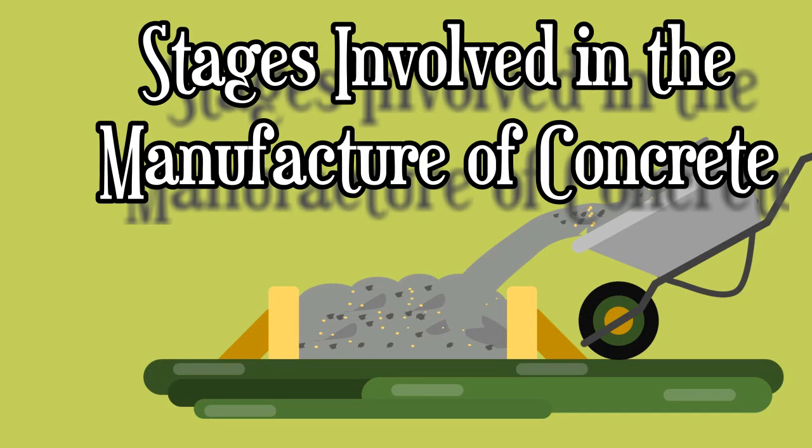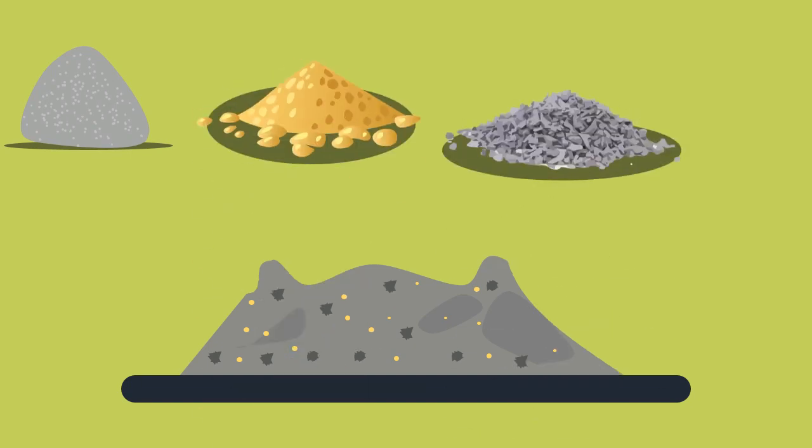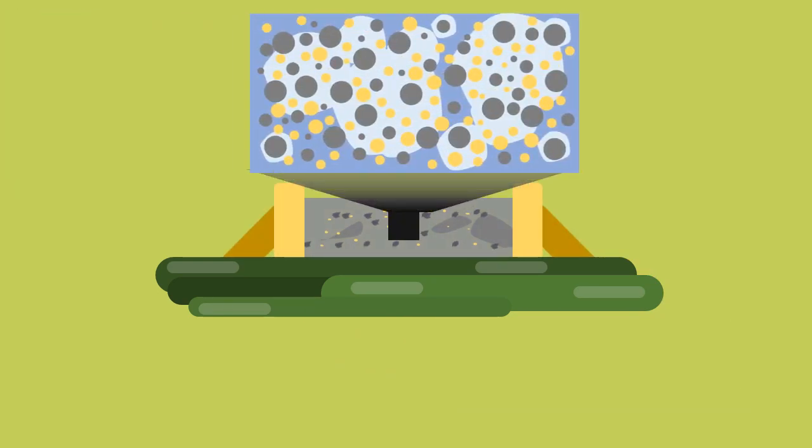Stages involved in the manufacture of concrete. You may be aware, the concrete is the homogeneous mixture of cement, fine aggregates, coarse aggregates and water, which consolidates into a hard solid due to the chemical action between the cement and water.